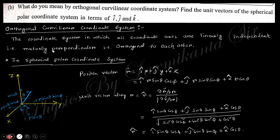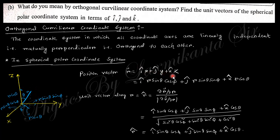Next question: What do you mean by orthogonal curvilinear coordinate system? Then find out the unit vectors of spherical polar coordinate system in terms of i-cap, j-cap, and k-cap. An orthogonal coordinate system is one in which all coordinate axes are linearly independent — that is, mutually perpendicular to each other. In spherical polar coordinates, any position vector can be written as r-vector = i-cap·x + j-cap·y + k-cap·z, where x = r sinθ cosφ, y = r sinθ sinφ, and z = r cosθ.